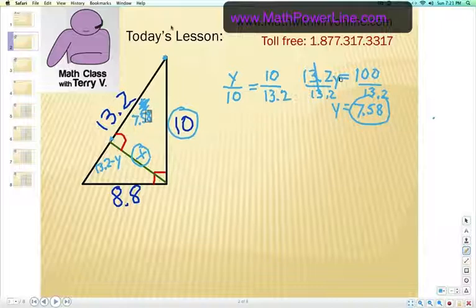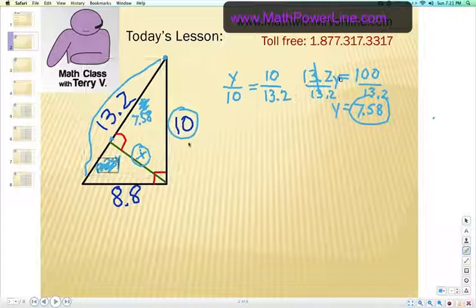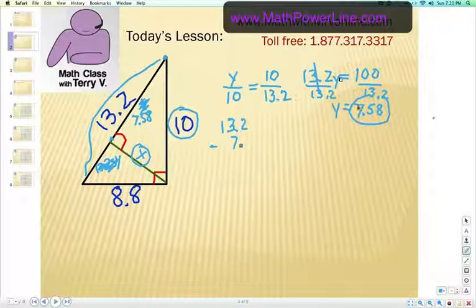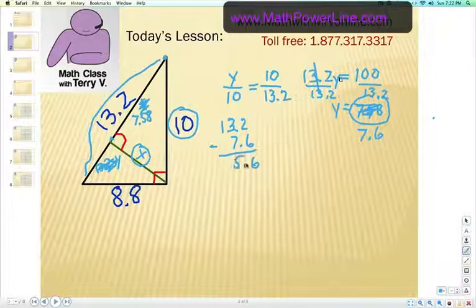Now the whole hypotenuse from this top here to down here is 13.2, so we just need to subtract to find out what this other part is. Let's do that: 13.2 take away 7.58. For the purposes of our problem, let's call this 7.6. So 13.2 minus 7.6, that's going to be 5.6.